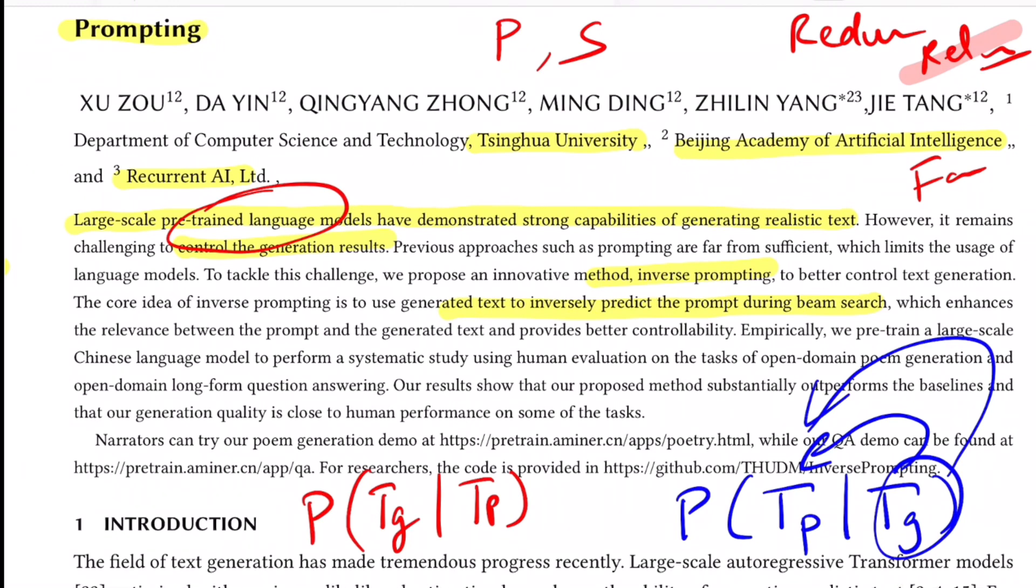They test their system on open domain poem generation and open domain long form question answering. Long form question answering, you can think of as Quora, where you write a question that might be two lines but the answer you're expecting could be floating around two or three paragraphs. So these are two tasks that they evaluate under user study.